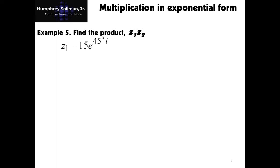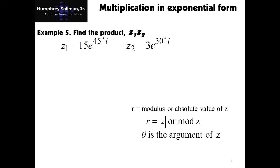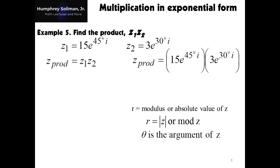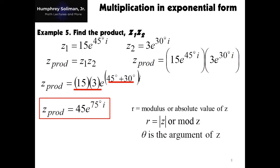Another form for example number 5 — find the product using exponential form. Our given is z1 equals 15 times e raised to 45 degrees i, and z2 equals 3 times e raised to 30 degrees i. The given arguments are in degrees. In multiplying complex numbers in exponential form, we multiply the moduli and add the arguments. This gives us z prod equal to 45 times e raised to 75 degrees i.